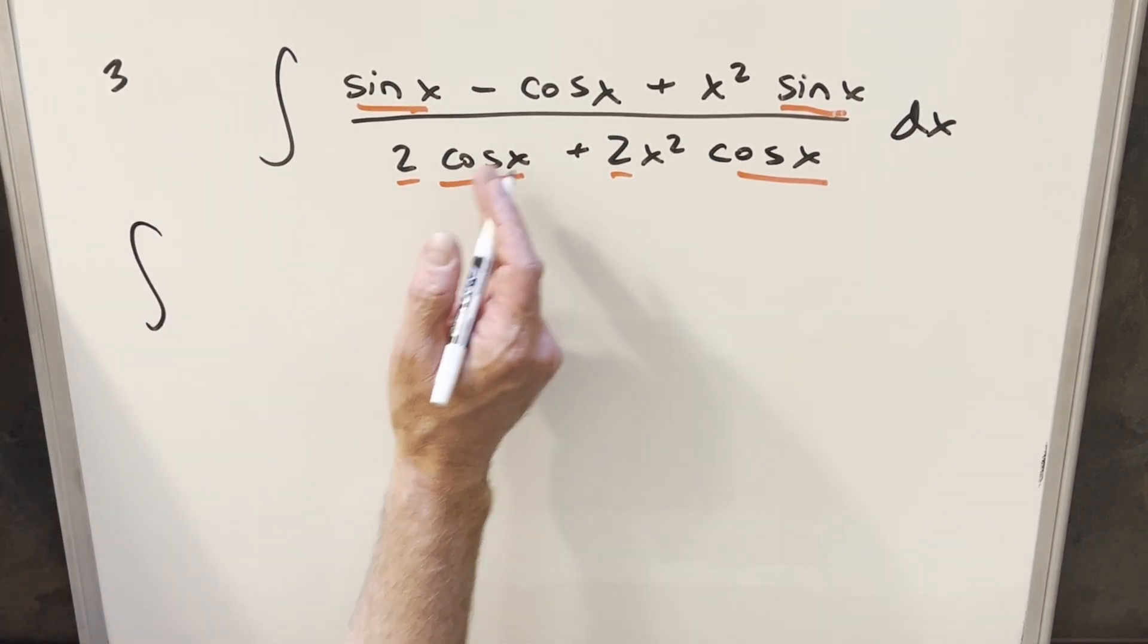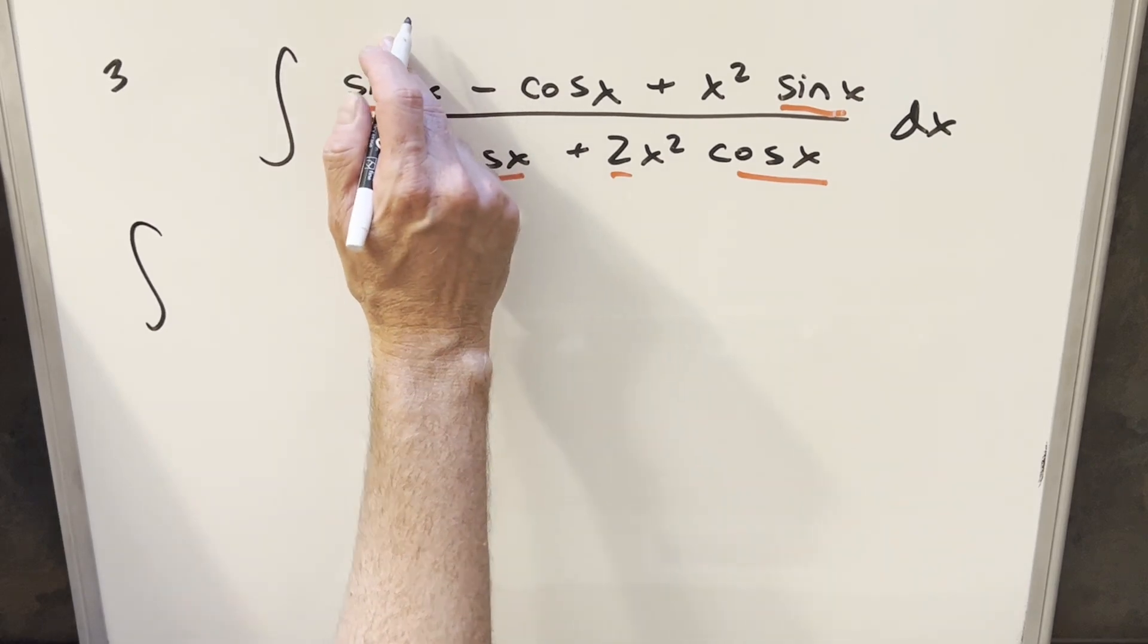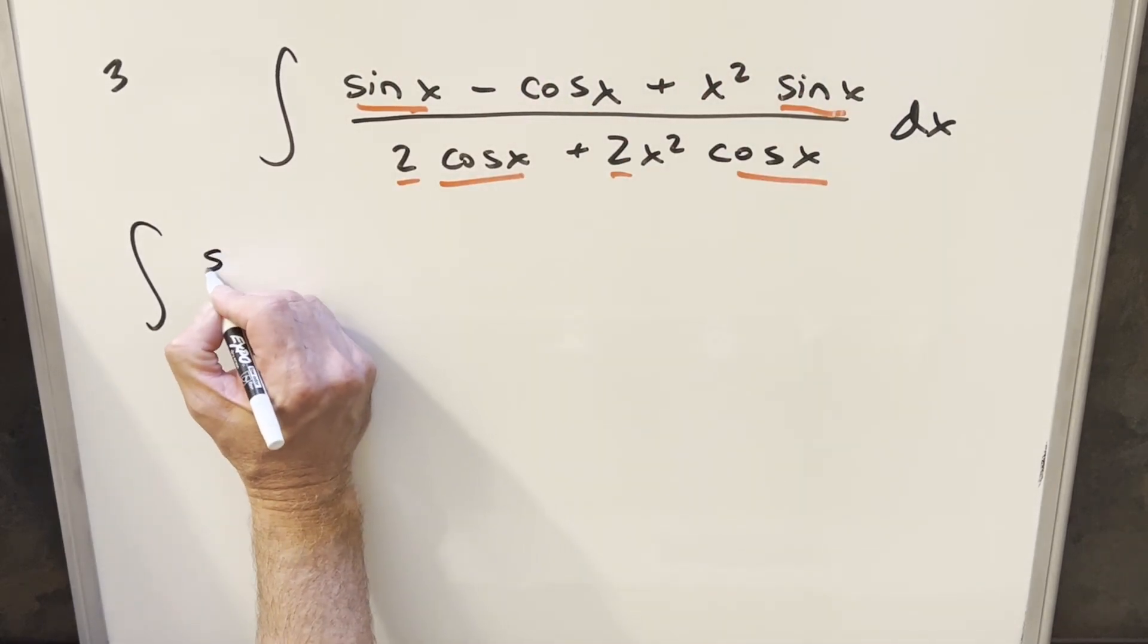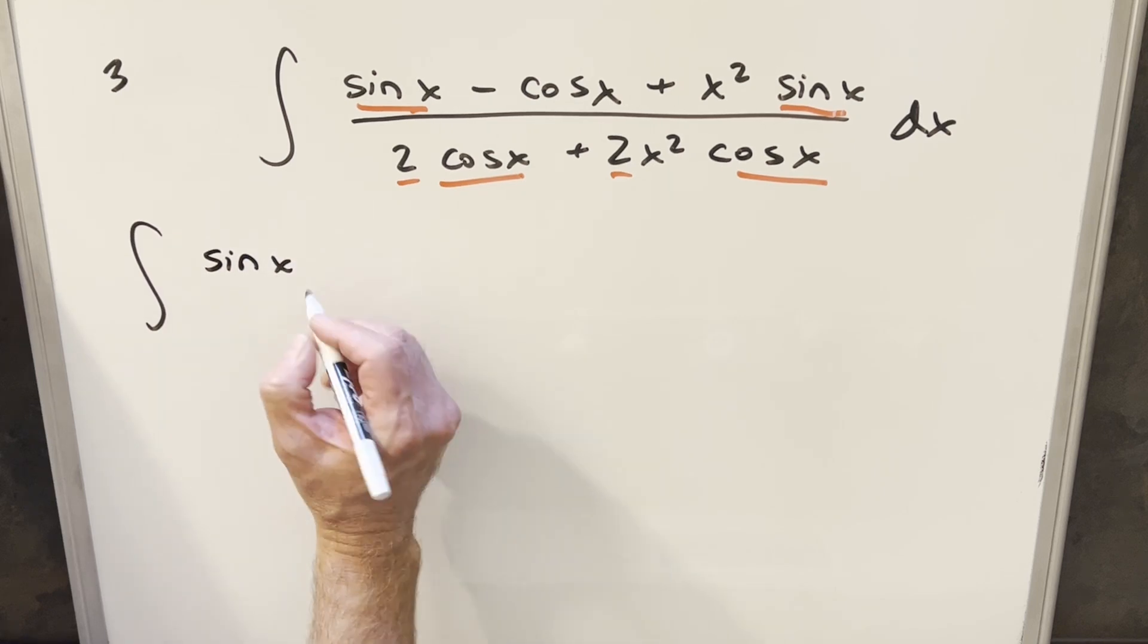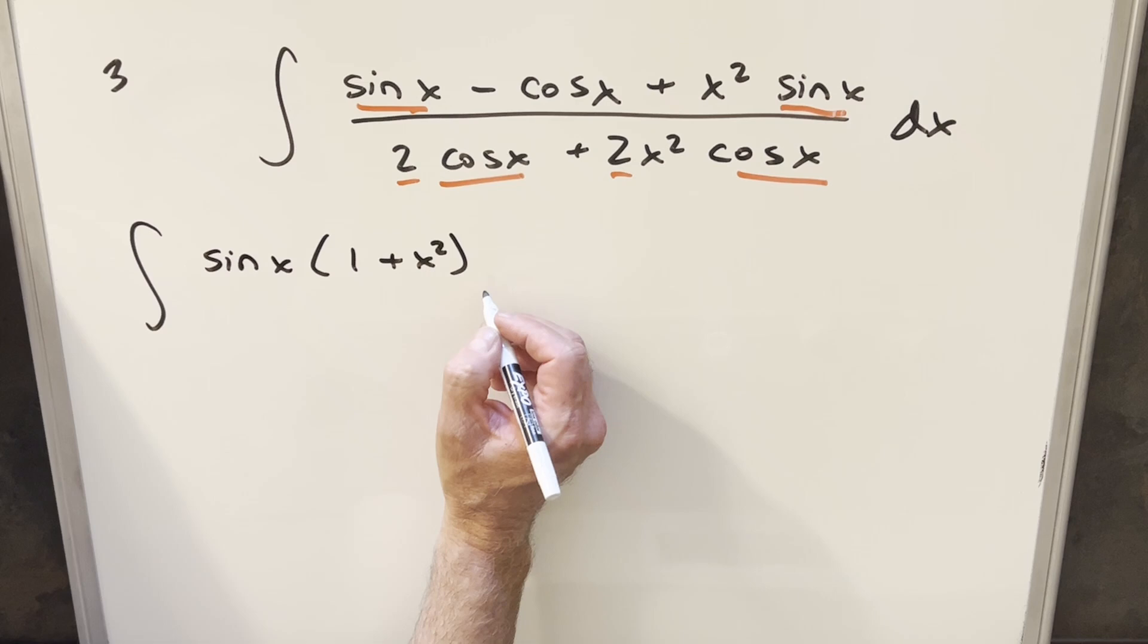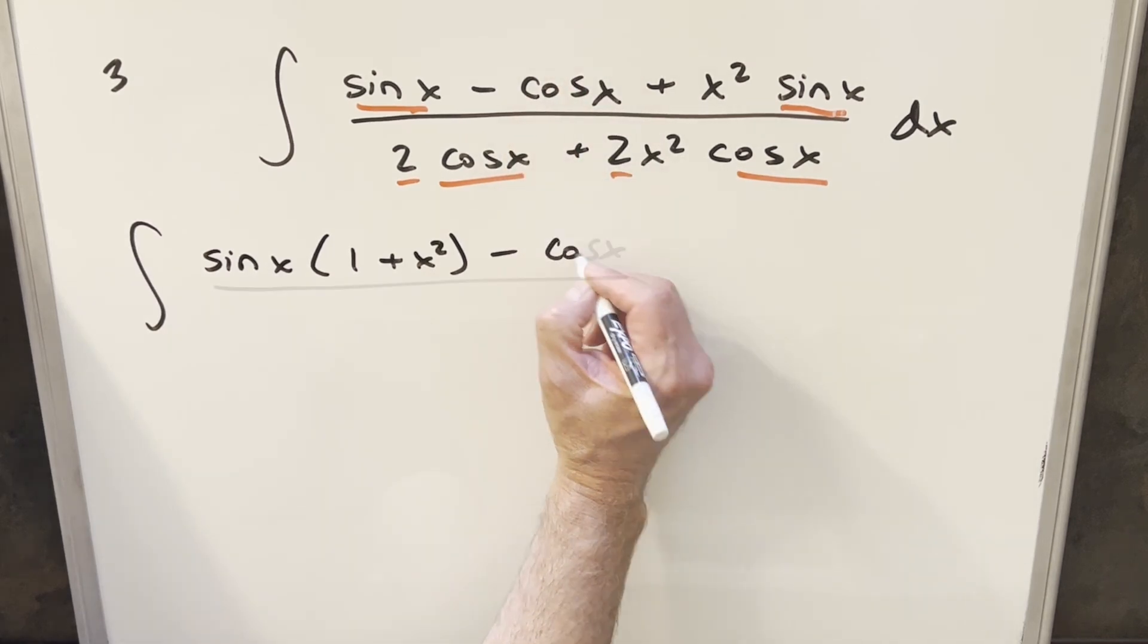So let's see. If I rewrite this, I'm going to group the sine x with the x sine x and factor out a sine x. So in the numerator, I'm going to write this as sine x times 1 plus x squared. And we still have this minus cos x.